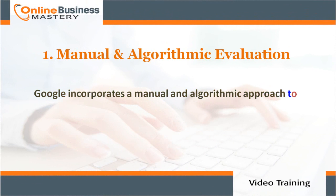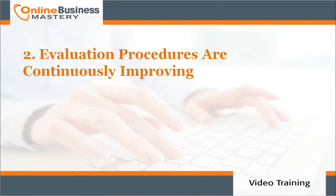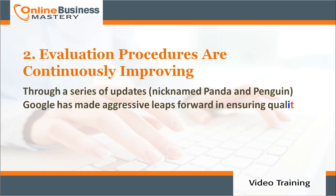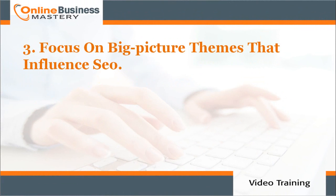Number one: manual and algorithmic evaluation. Google incorporates a manual and algorithmic approach to reviewing web pages — this twofold approach is designed to ensure that quality always triumphs. Number two: evaluation procedures are continuously improving. Through a series of updates nicknamed Panda and Penguin, Google has made aggressive leaps forward in ensuring quality.